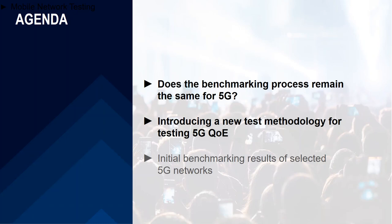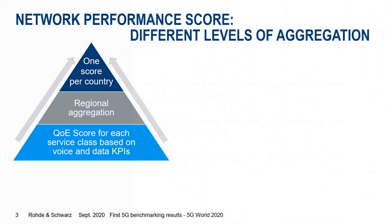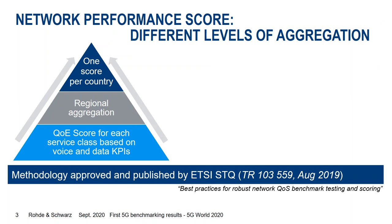Before discussing the initial results of benchmarking, I would like to introduce the benchmarking methodology and explain whether this will change towards 5G or not. Our network performance score follows a methodology that has been approved and published by ETSI — an August 2019 technical report called 'Best Practices for Robust Network QoS Benchmark Testing and Scoring.'